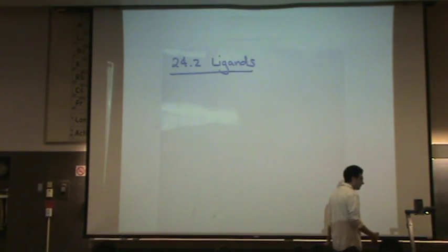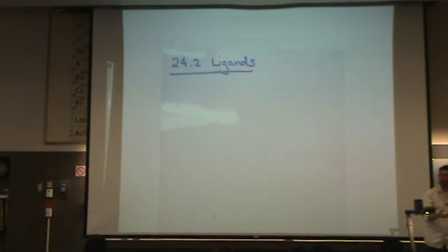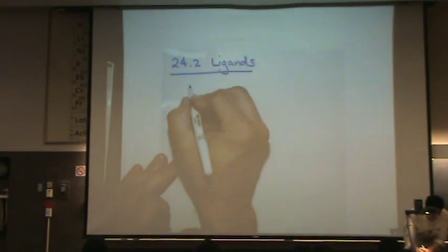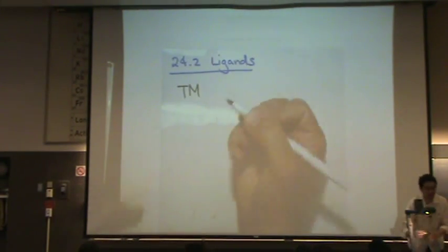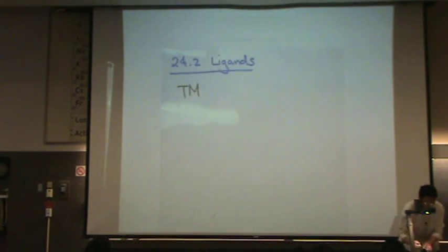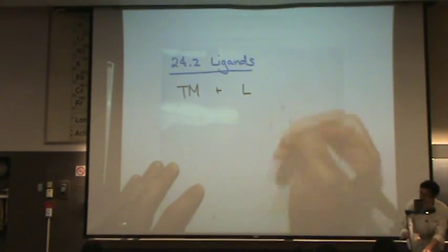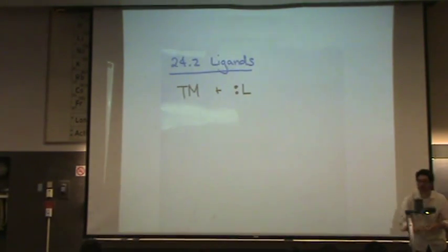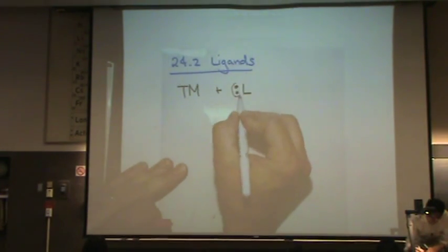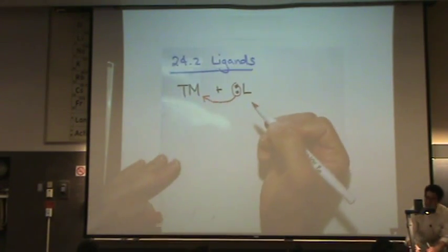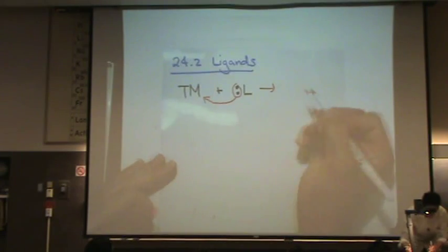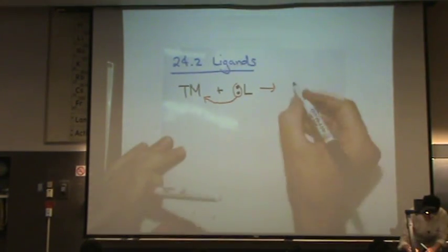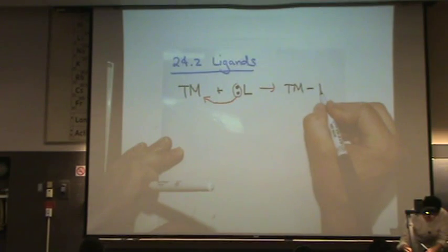We need to say more about ligands so you know exactly what they are, and I'm actually going to give you some examples. Let's say you have a transition metal, I'll put TM for transition metal, and you add a ligand, I'll put L for ligand. That ligand is going to have a lone pair of electrons. That lone pair of electrons right here will attack the transition metal to form that transition metal now bonded to the ligand.